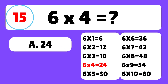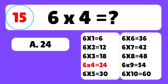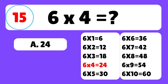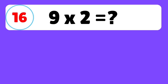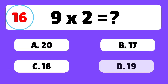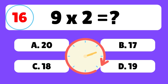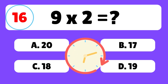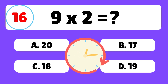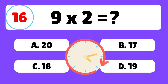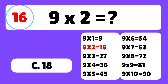Question 16. What is 9 times 2? The answer is C. 9 times 2 is equal to 18.